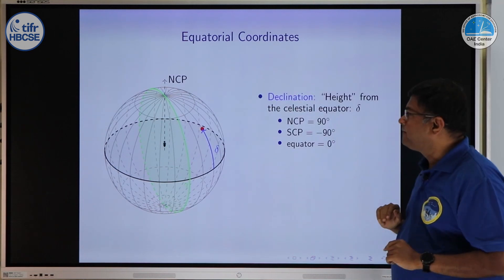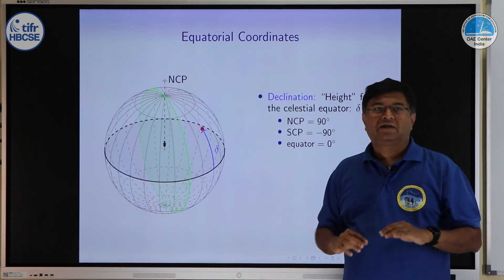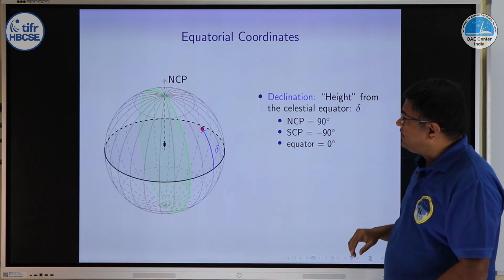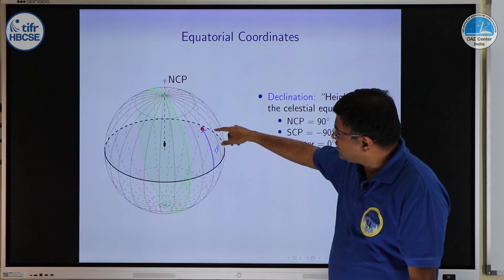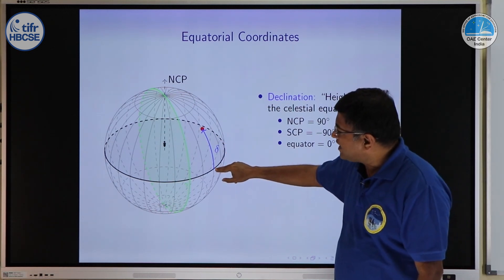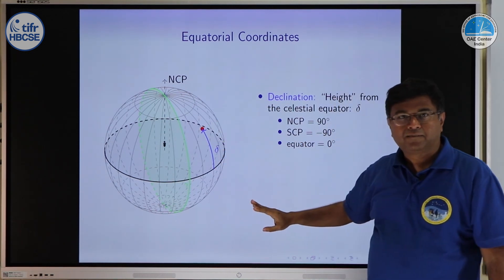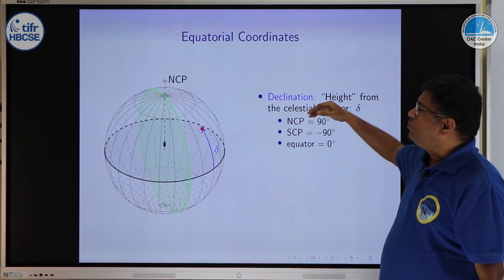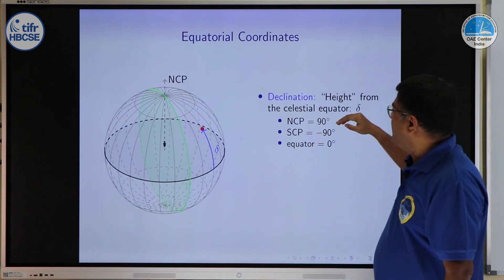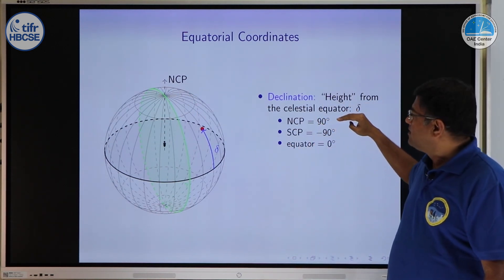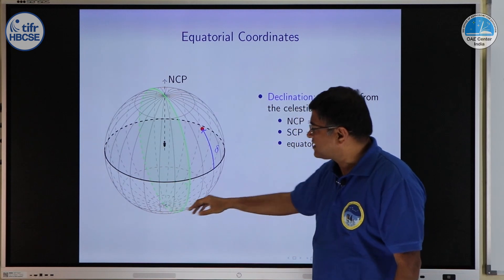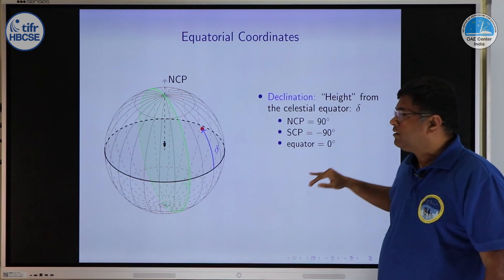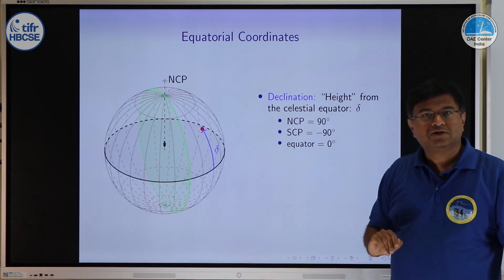How we will use that? First, like latitude, we define a coordinate which is called declination. Declination, usually shown by symbol delta, it just tells you how high the star is from the equator, exactly like latitude there is no difference at all. North celestial pole its declination will be 90 degrees. South celestial pole its declination will be minus 90 degrees and equator by definition will be 0 degrees.